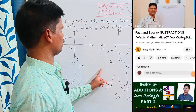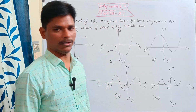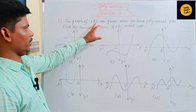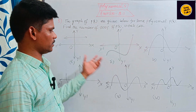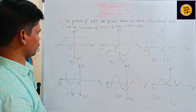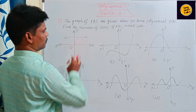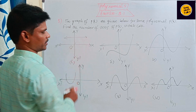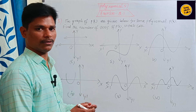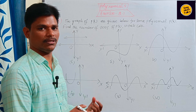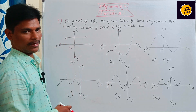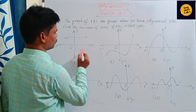Here we are going to discuss the topic polynomial exercise 2.1. Observe this question: the graph of p is given below, some polynomial p is given. Find the number of zeros of that given polynomial. The zeros are those points which touch the x-axis. Here this line is just parallel to the x-axis and does not touch the x-axis, so there are no zeros.